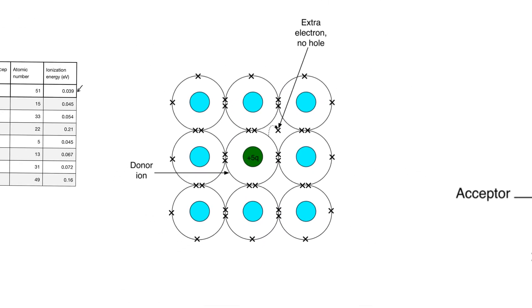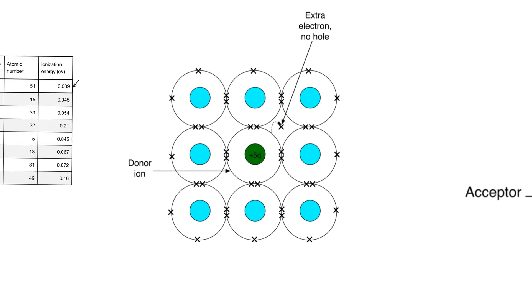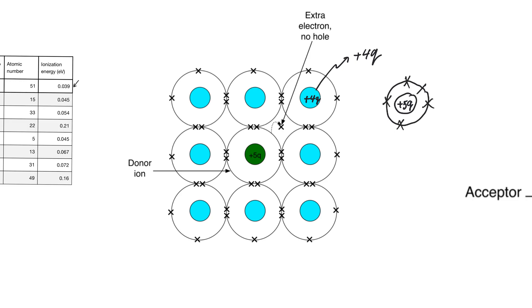Let's look at a silicon crystal into which a donor atom has been added. Donors come from group 15, which is the group to the right of the silicon group. If silicon nuclei have 14 protons and we drew a dotted circle around the nucleus and the internal orbits to form something with a net charge of plus 4q, we can do the same with donors. A donor atom has inner orbits and a nucleus with a net charge of plus 5q, and it has five electrons in the outer shell by definition because it's a group 15 element. Therefore, if you look at the donor atom overall, it is electrically neutral.